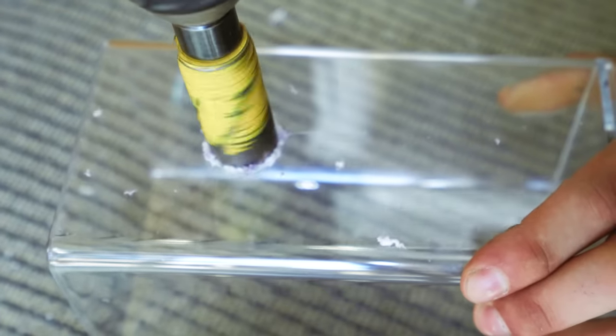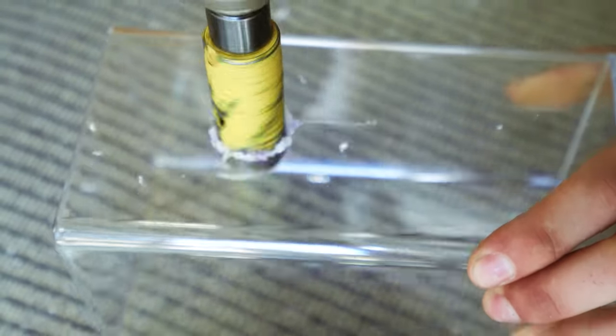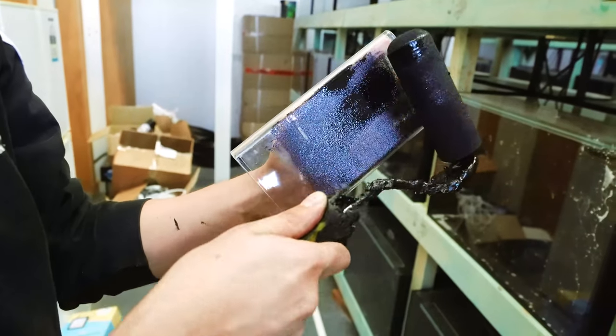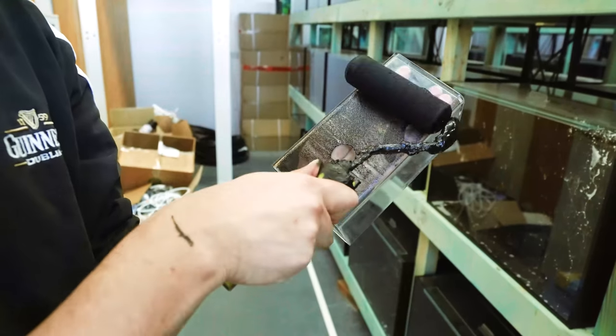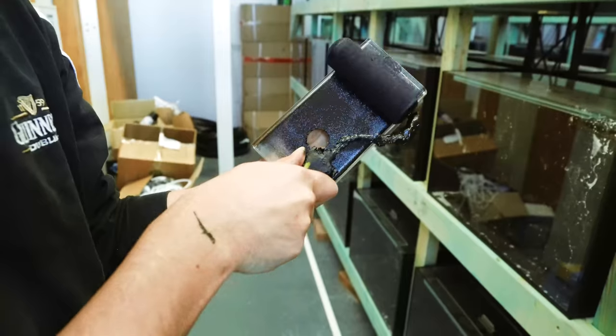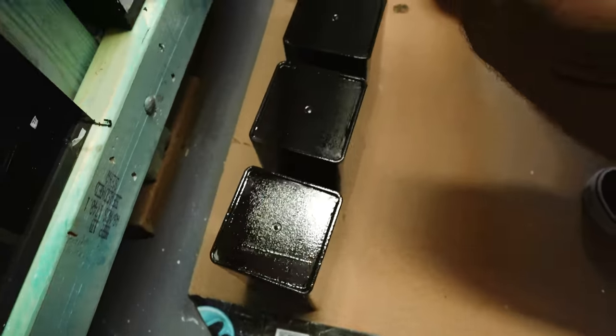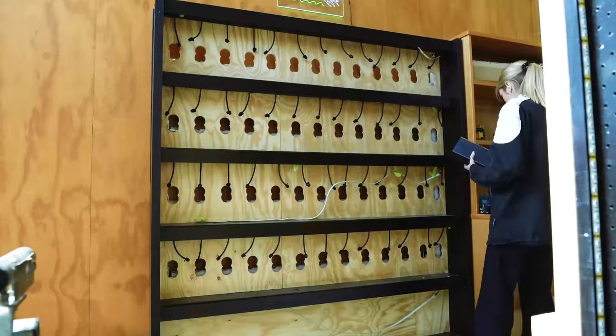For the containers for the betta racks we use these Kmart containers. I think these are 4 bucks each and they hold a litre of water and they worked out to be a really good size for the system and a really cheap option and something easy for you guys to use at home. We also went and painted all the backs and sides of these black to match the whole entire rack.